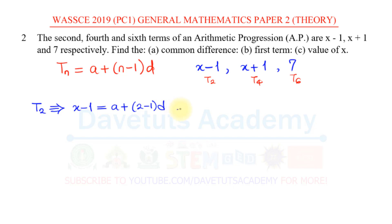This is going to give us x-1 = a, 2-1 is 1, 1 multiplied by d is d, so it is a+d. We can note that as one of our equations and in short I will call it equation 1.